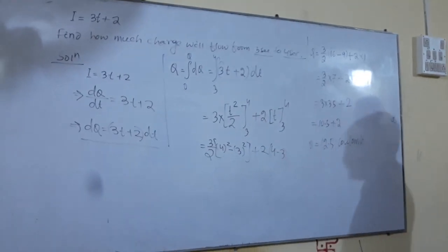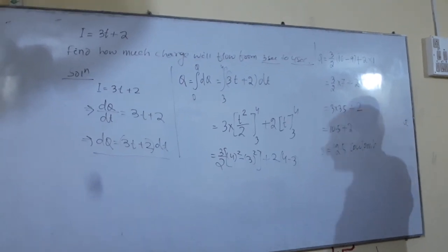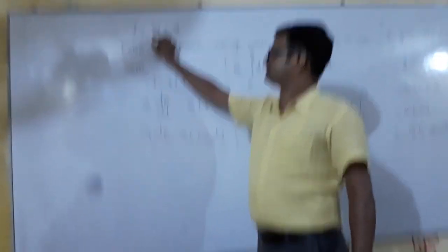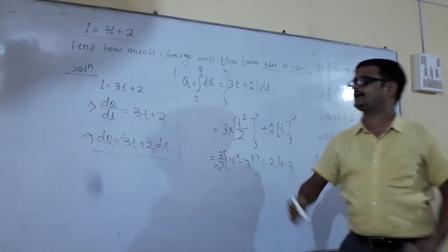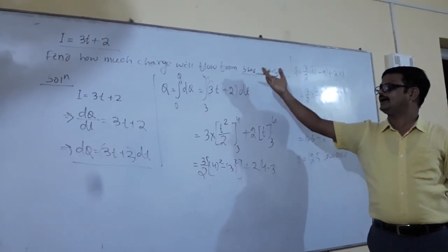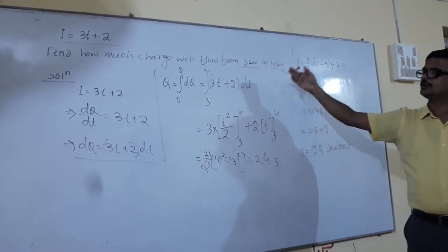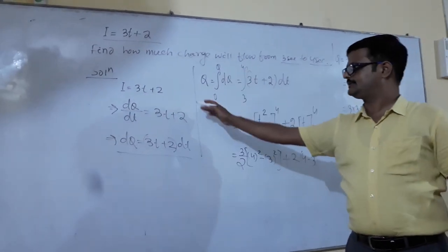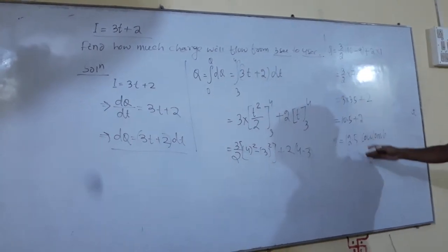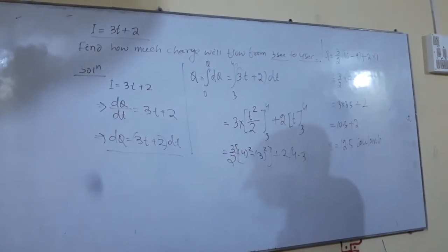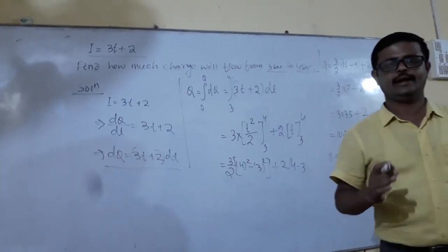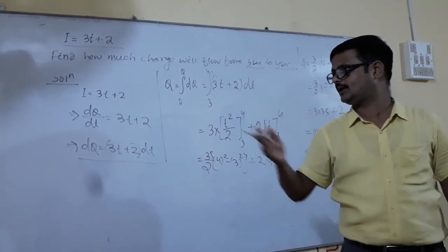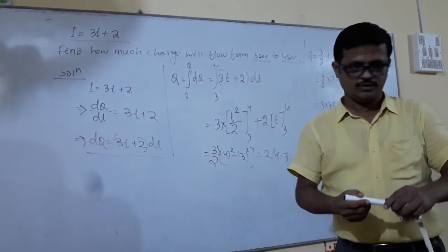This is the solution. Such problems come many times in exams. If the current is given and the question asks to find the amount of charge from one time to another — say 1 second to 2 seconds or 5 seconds to 8 seconds — if you know the formula for integration, you can do this very easily. Where charge was given you got current; in this question current was given and we got charge.